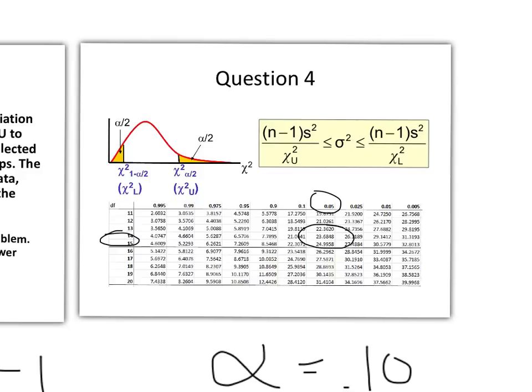And then to find the lower one, we're going to use this equation here to find the right column. 1 minus alpha over 2. So 1 minus 0.05, our alpha over 2 value, is 0.95. So that's the column we want. So here is our lower limit value, 6.5706.